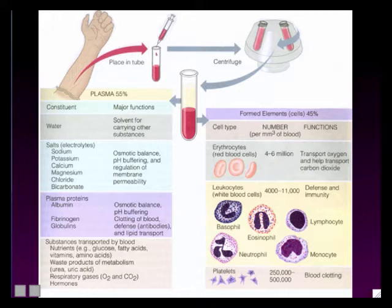There are five subcategories of white blood cells. In this lecture on blood, you do not have to memorize them, but toward the end of the semester during the immune system lecture, you will need to memorize the names of the five types. The last of the three formed element types are called the platelets, and they are involved in blood clotting.